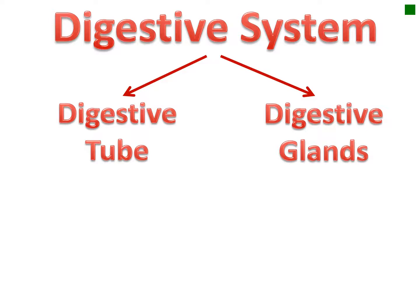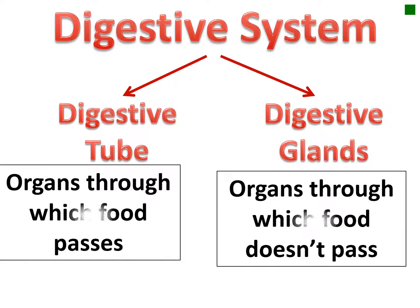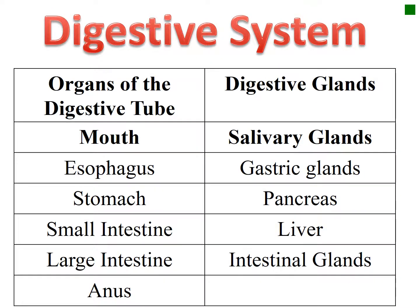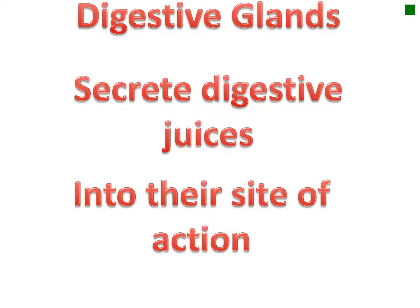The digestive system is divided into two main parts: the digestive tube and the digestive glands. The digestive tube consists of the organs that food passes through, while digestive glands are the organs through which food does not pass. Organs of the digestive tube are: mouth, esophagus, stomach, small intestine, large intestine, and finally the anus.